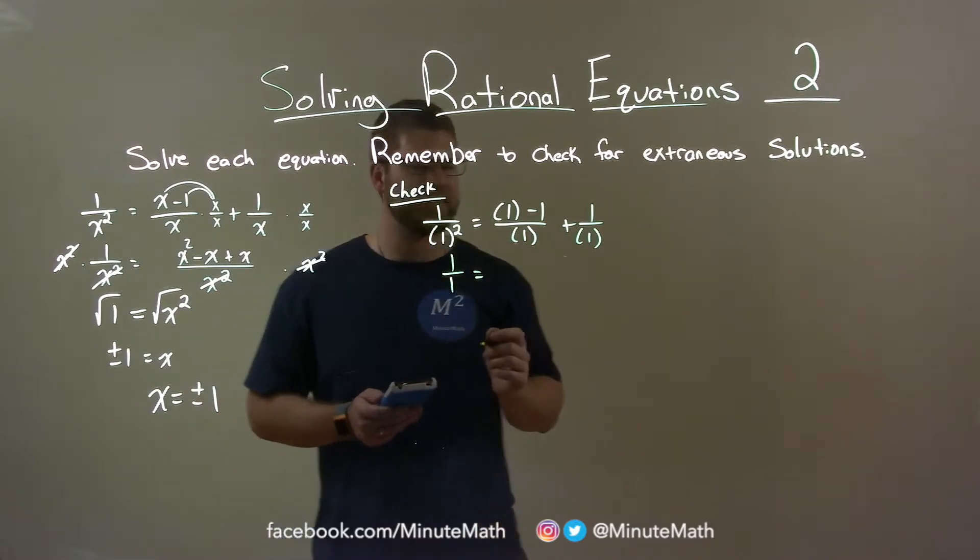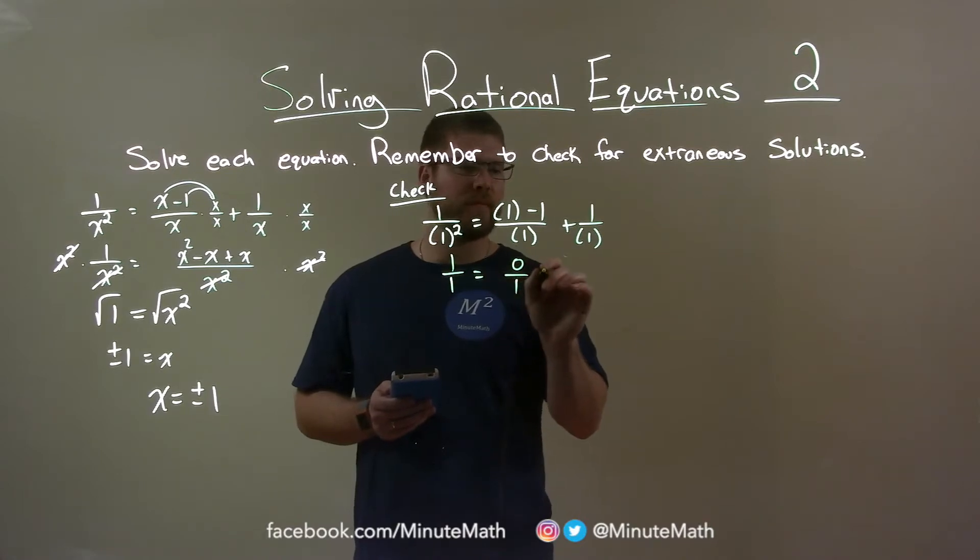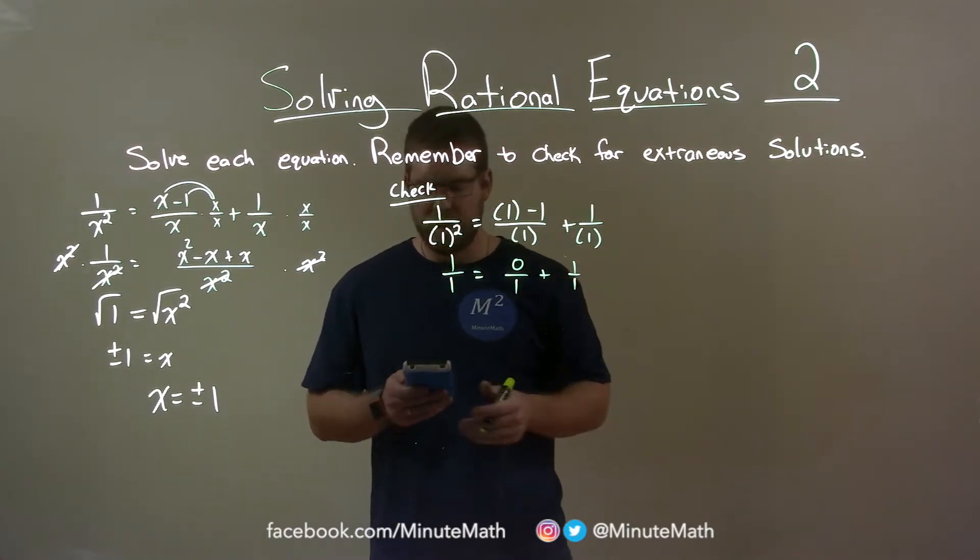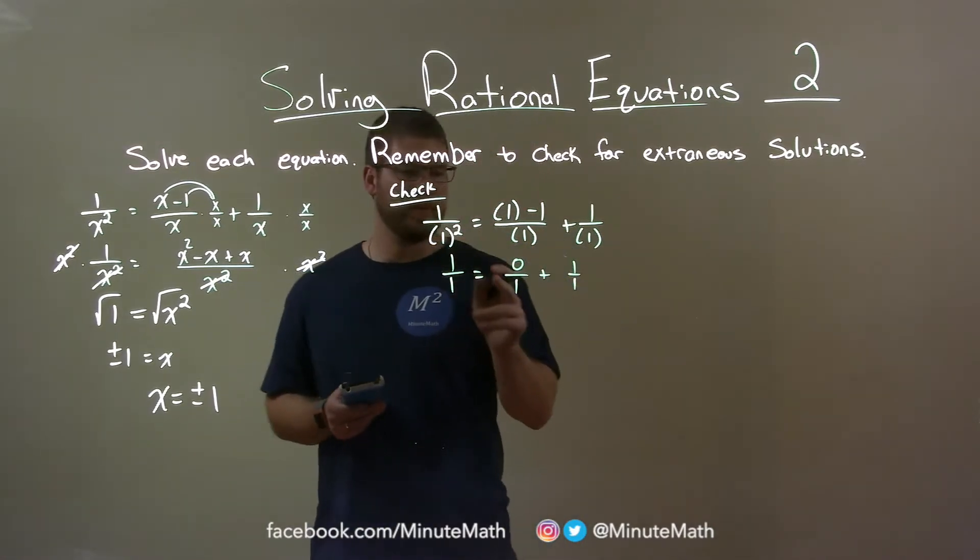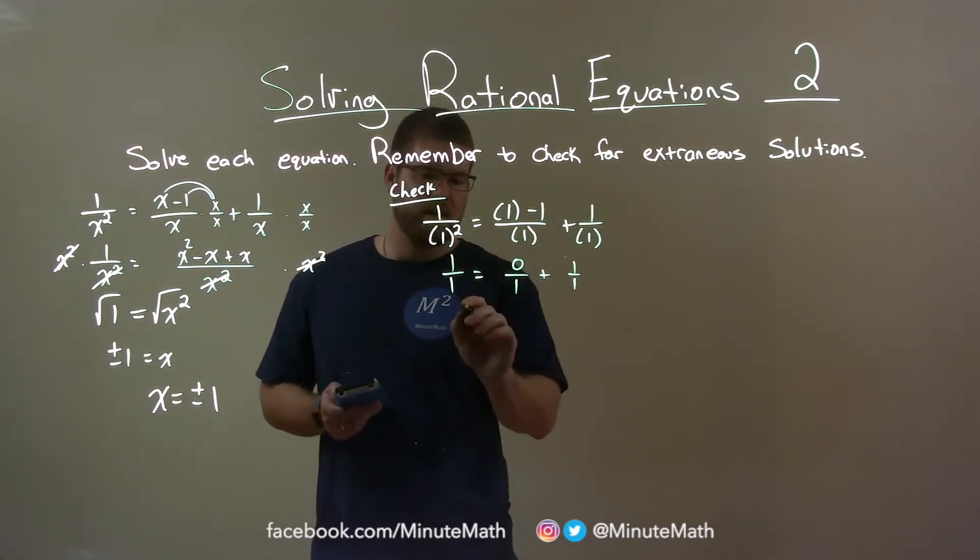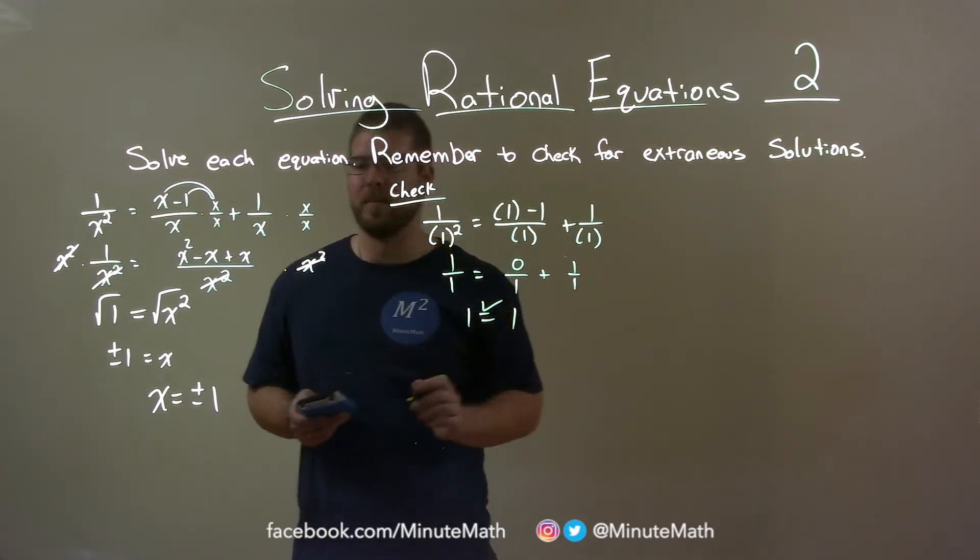1 minus 1 is 0, so it's 0 over 1 plus 1 over 1. The left and right hand side will be equal. 0 over 1 is 0, and we have 1 equals 1. Great.